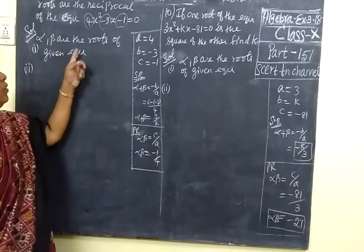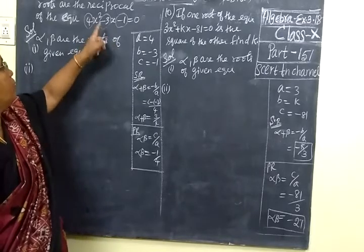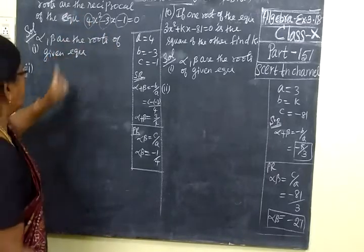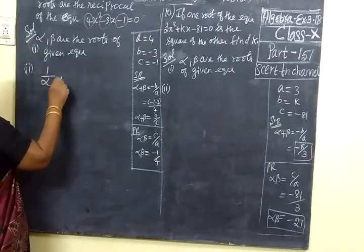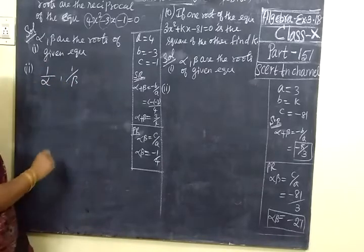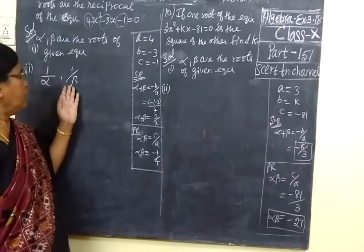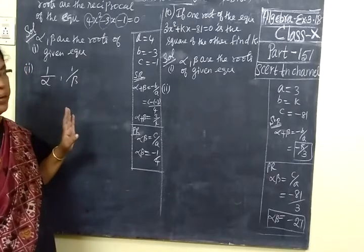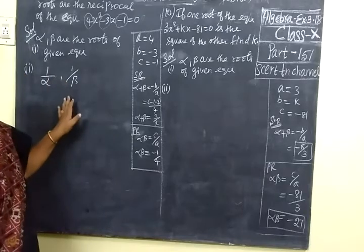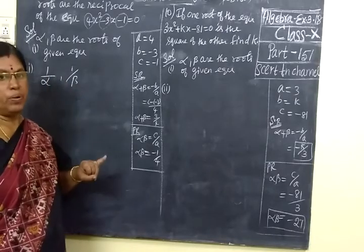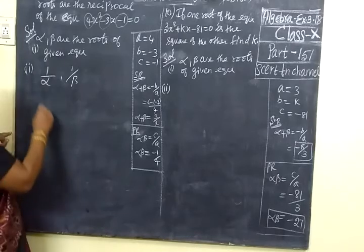Alpha and beta are the roots of the given equation. The reciprocal roots are 1 by alpha and 1 by beta. Alpha is the reciprocal of 1 by alpha, and beta is the reciprocal of 1 by beta. Now we find the sum of the roots.